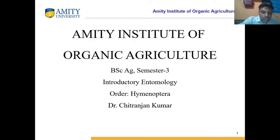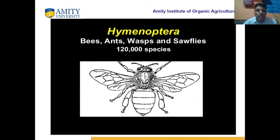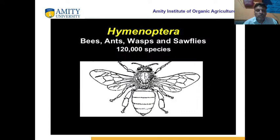Let us study Hymenoptera. Hymenoptera means 'membranous wing' and there are many examples like bees, honeybees, ants, wasps, and sawflies. There are 1,20,000 species which have been identified in Hymenoptera.